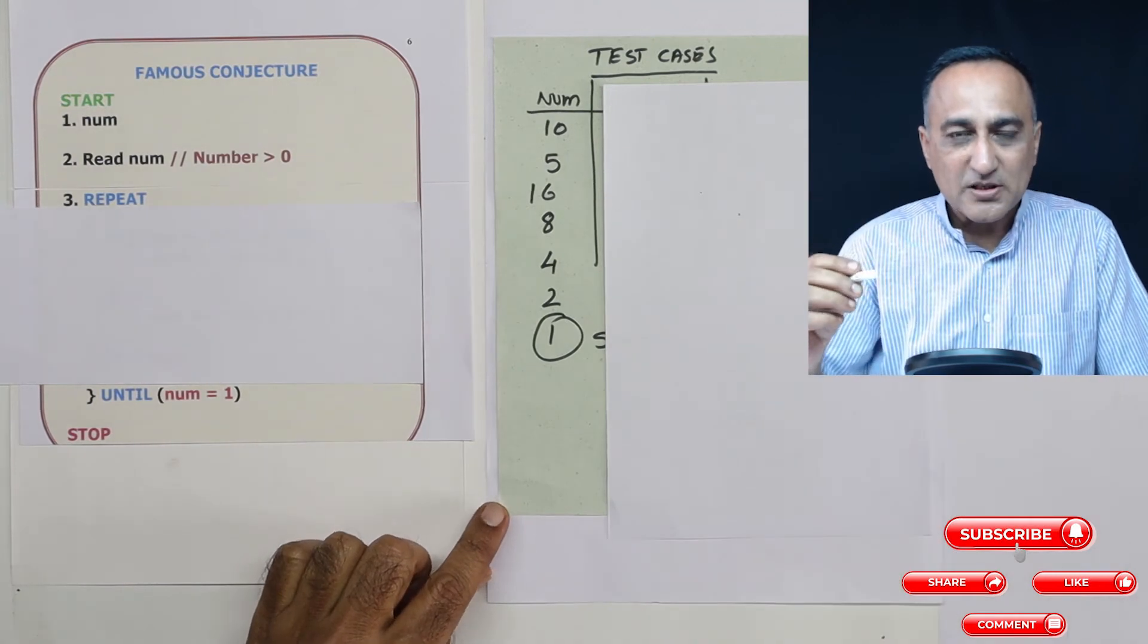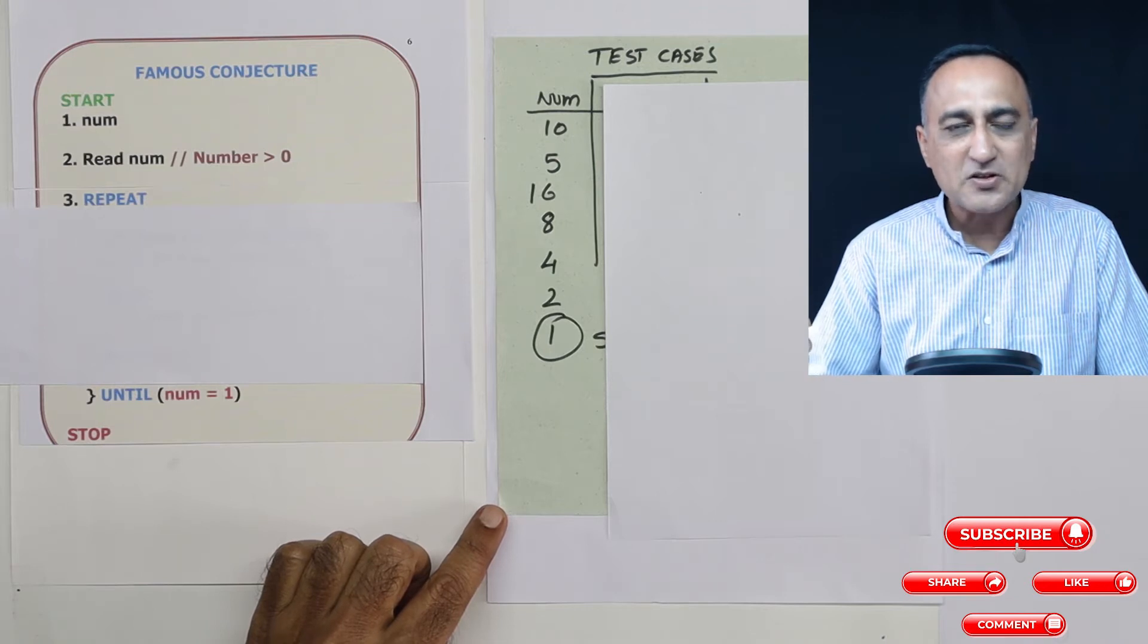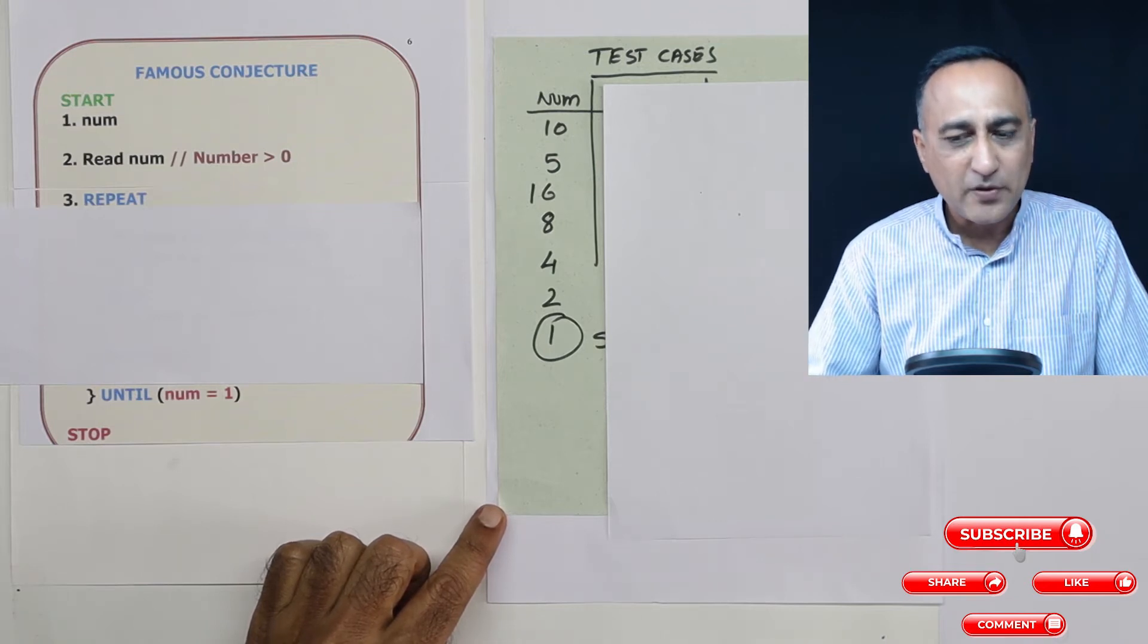If you follow the steps repeatedly of checking if the number is even, divide by 2. If the number is odd, multiply by 3 and add 1 to it.